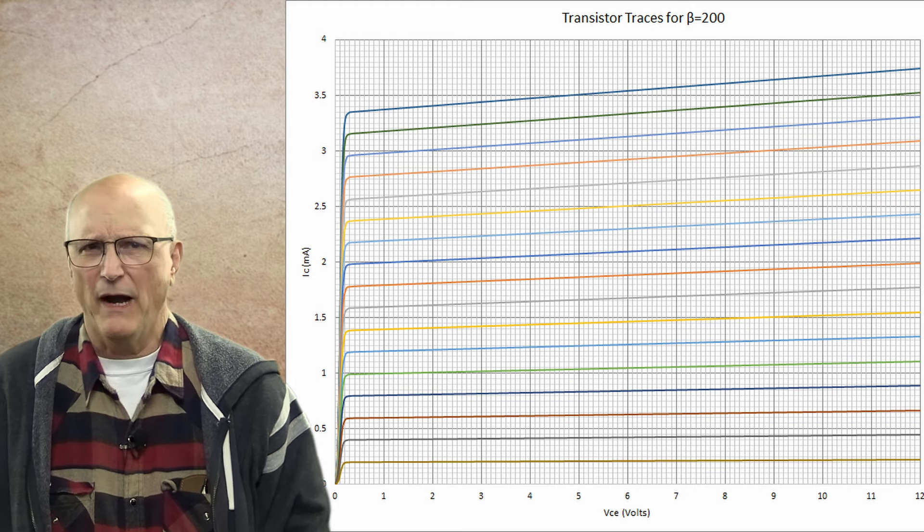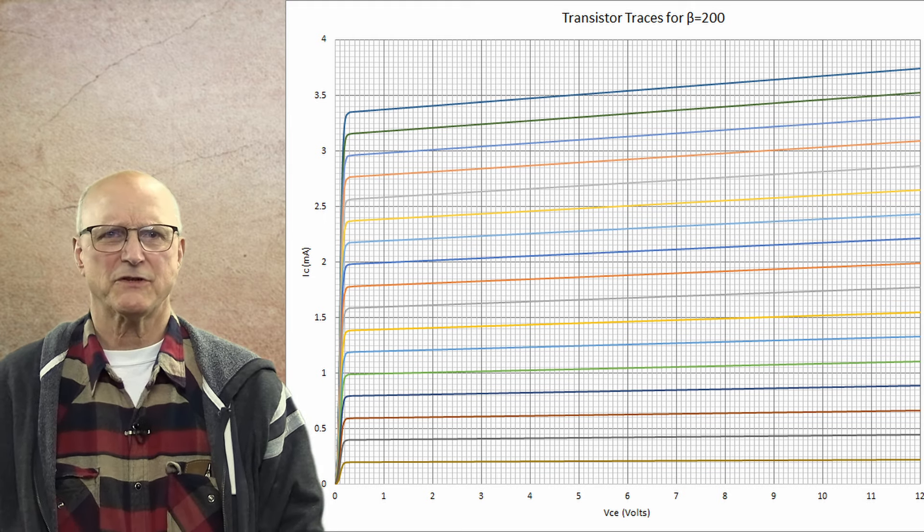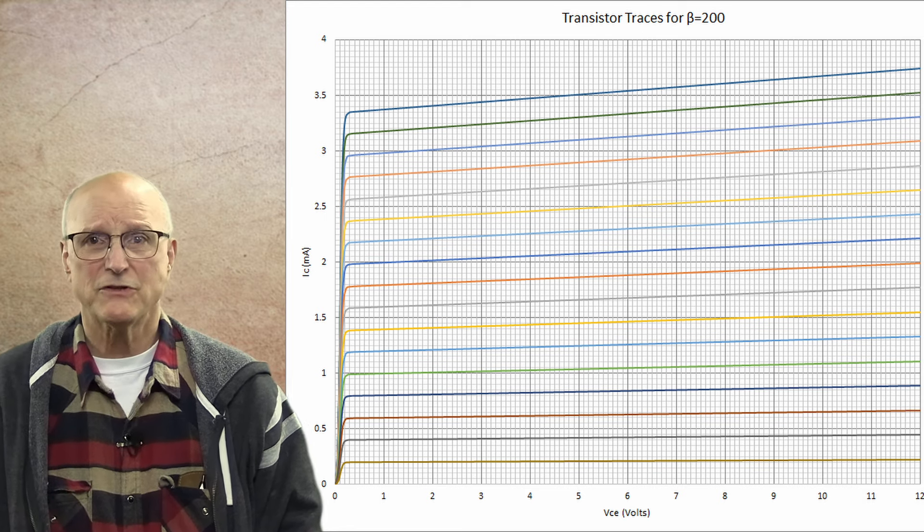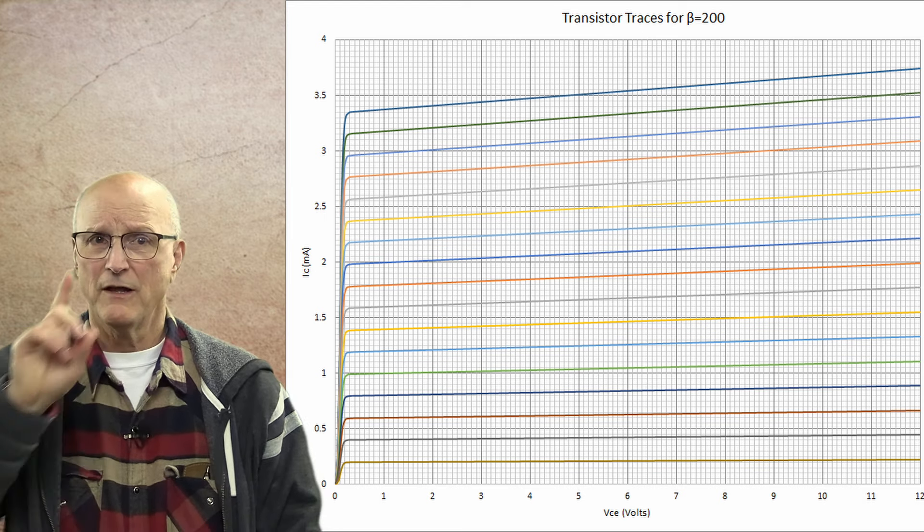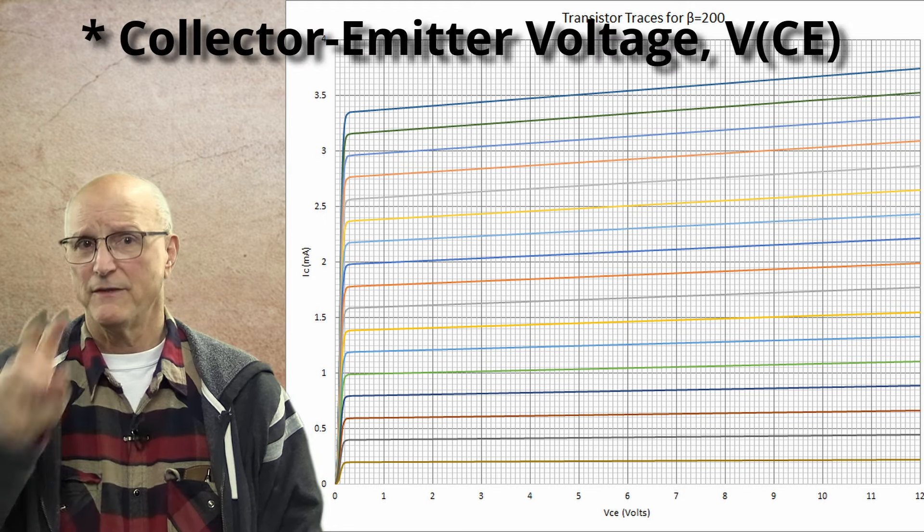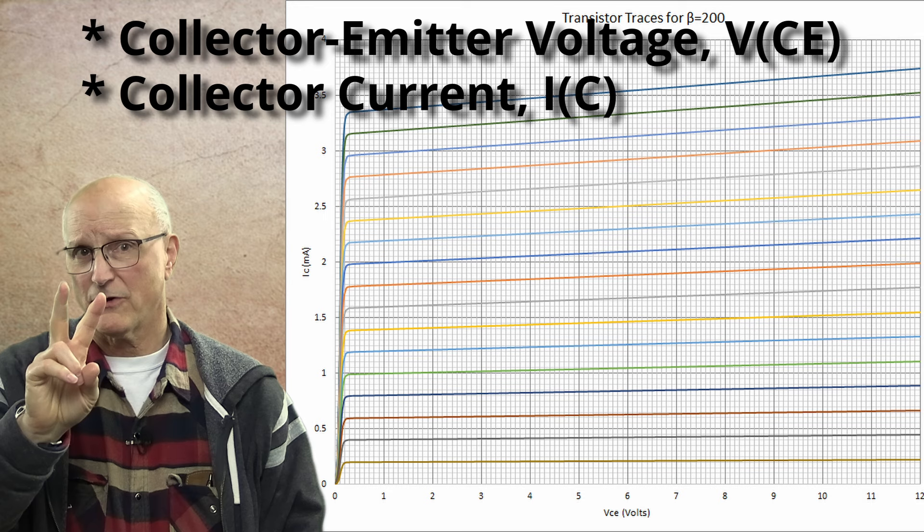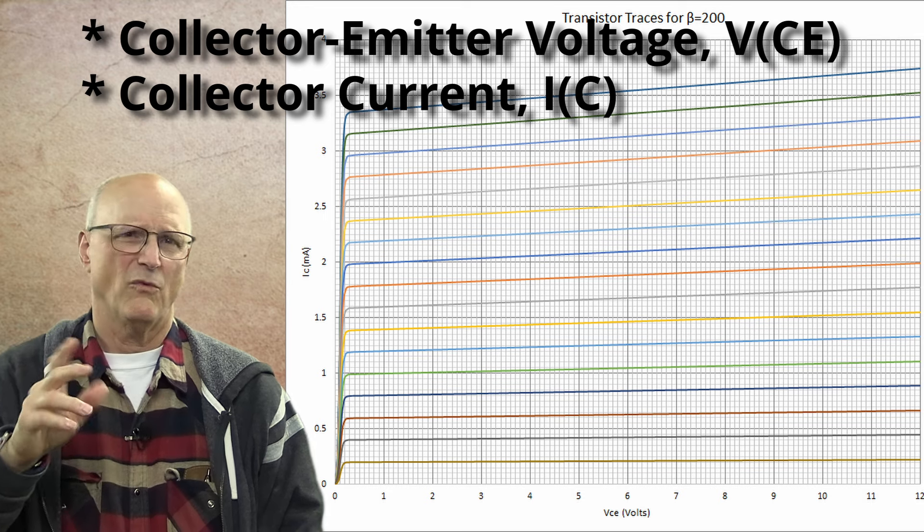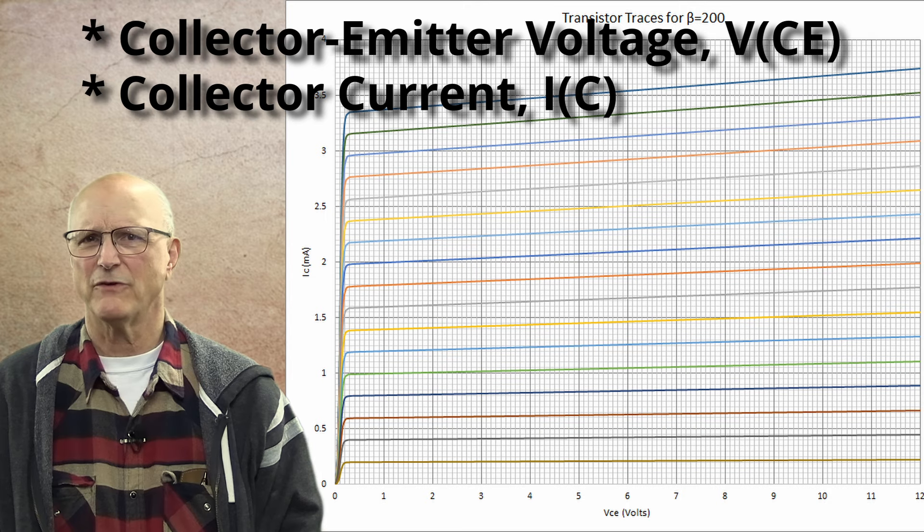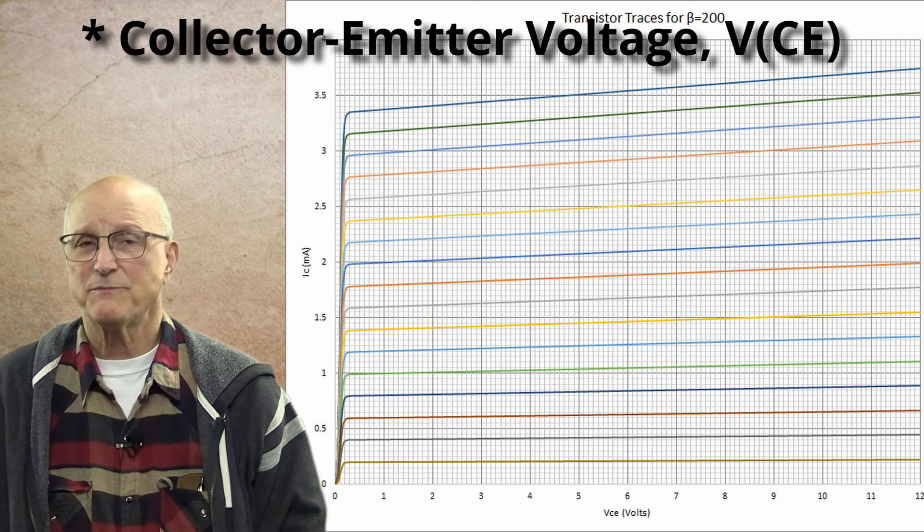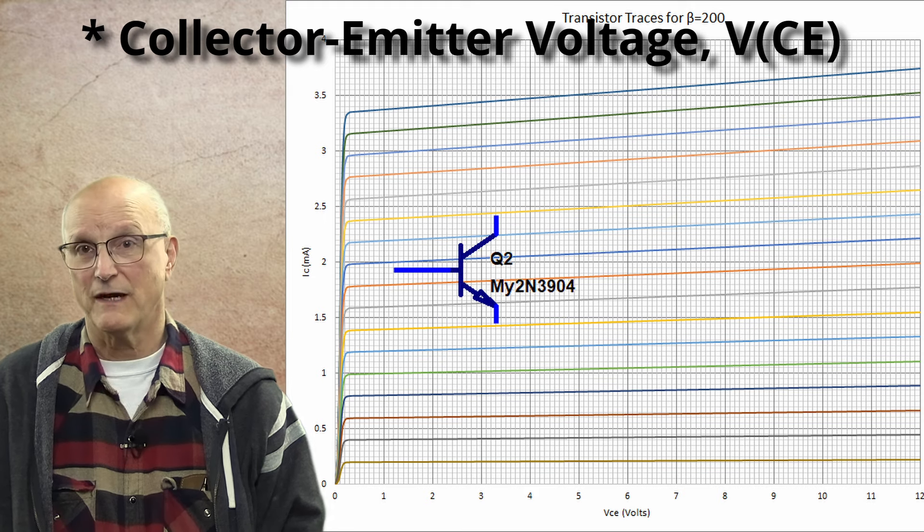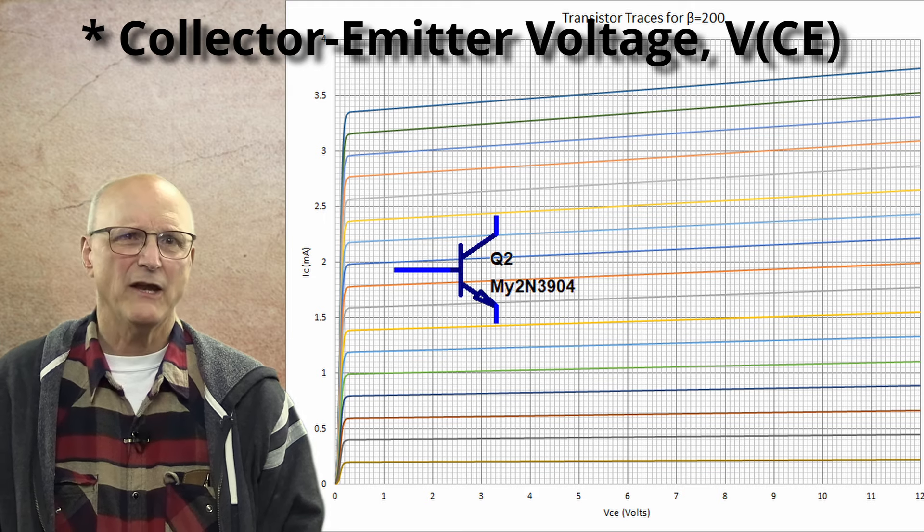When we have a bipolar junction transistor circuit, there are two things we're interested in relative to the transistor itself. The first is the collector emitter voltage. The second is the collector current. Why the collector emitter voltage and not simply the collector voltage? This is because we are interested in how the transistor itself is operating in the circuit and in what mode of operation.